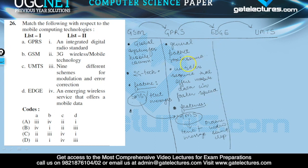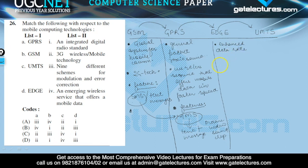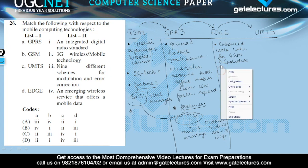After GPRS, EDGE technology was launched. EDGE is the enhanced version of GPRS. The full form of EDGE is Enhanced Data Rate for GSM Evolution. It is an enhanced version of GPRS and it uses 3G radio technology.